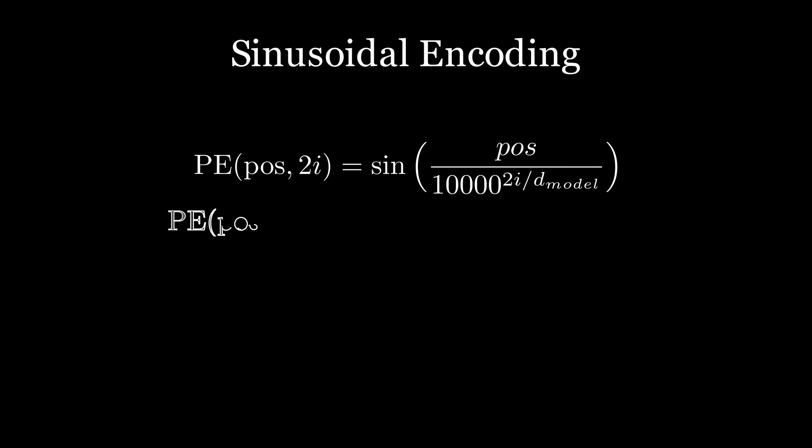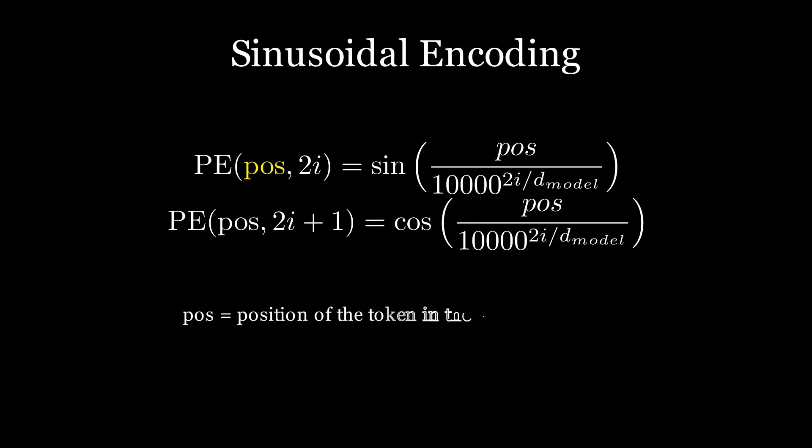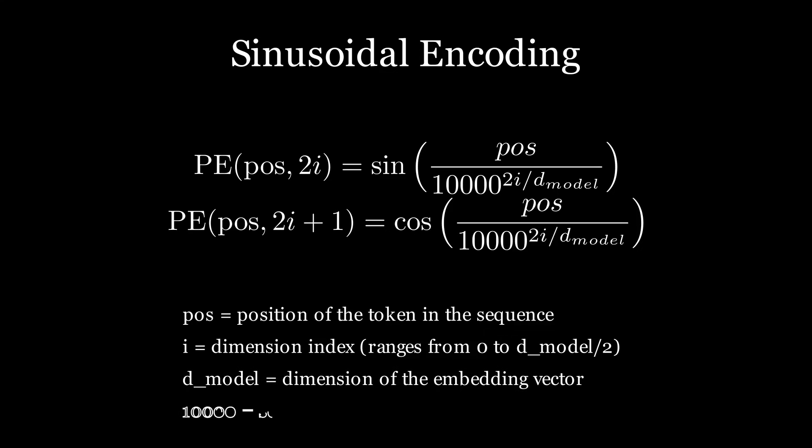As intimidating as the equation looks, it's quite simple once we break it down into its respective components and understand what's going on. POS stands for position or the location of the word in the sentence. I stands for the index of the dimension of the embedding. It will make more sense in a bit. D_model is the dimension of the embeddings you have chosen, and 10,000 is a scaling factor which is determined experimentally.